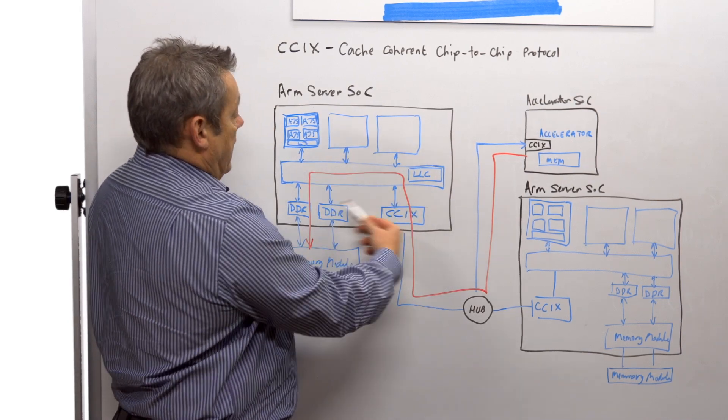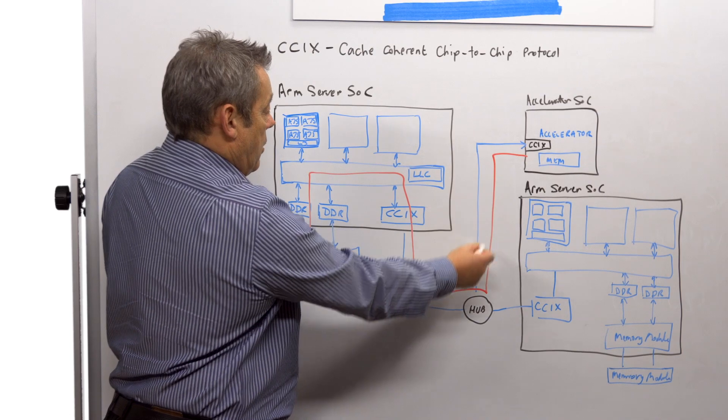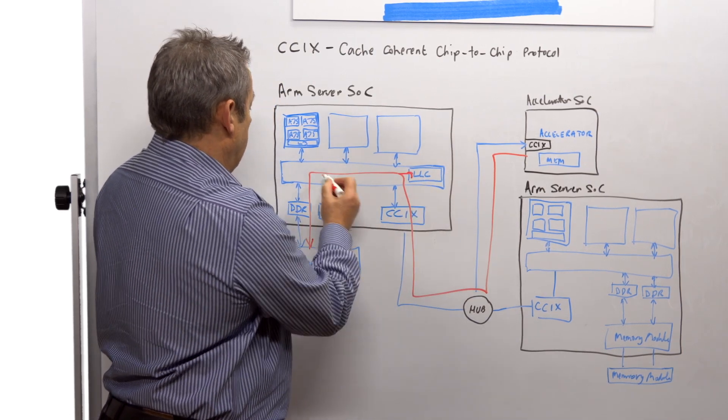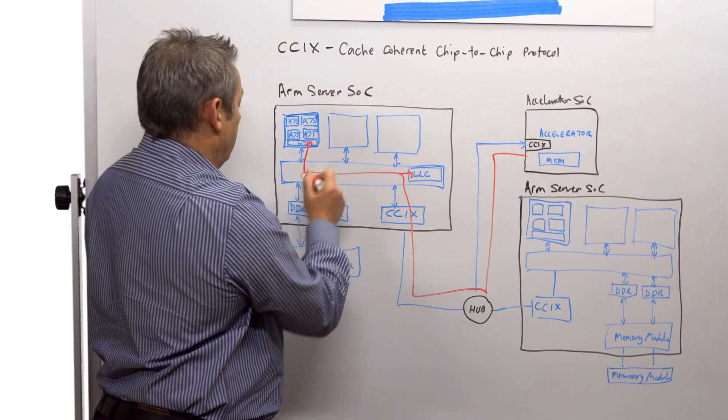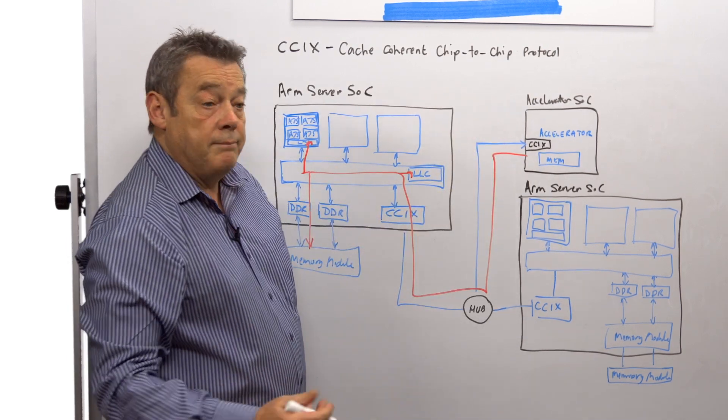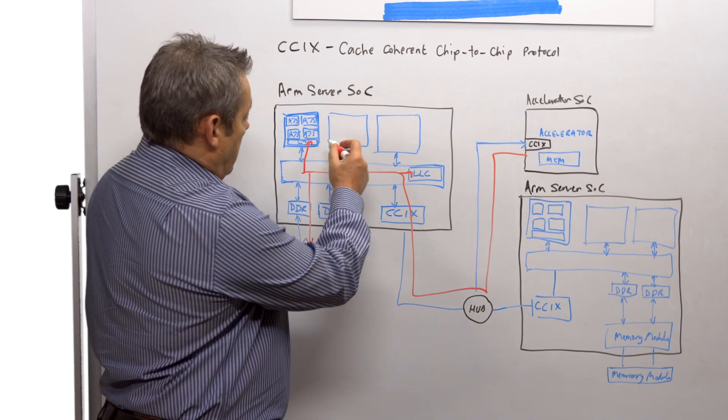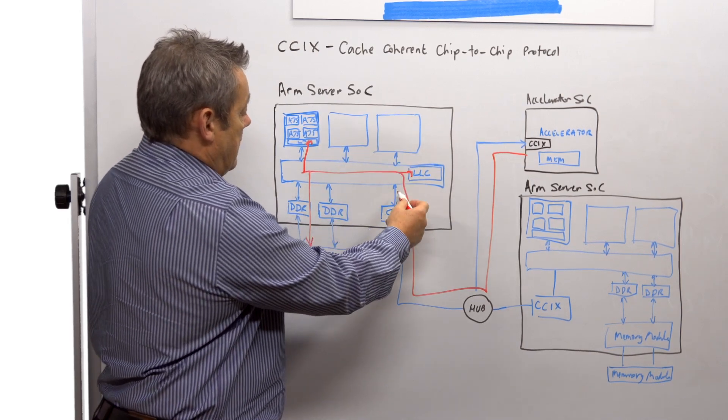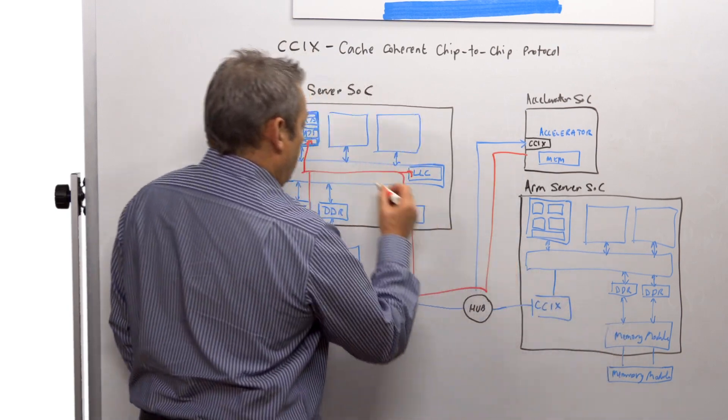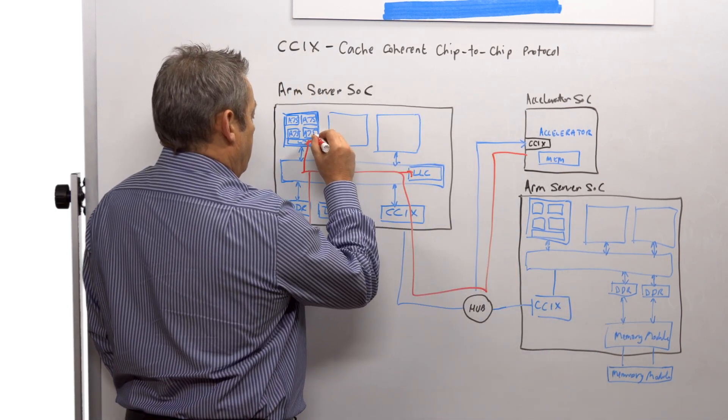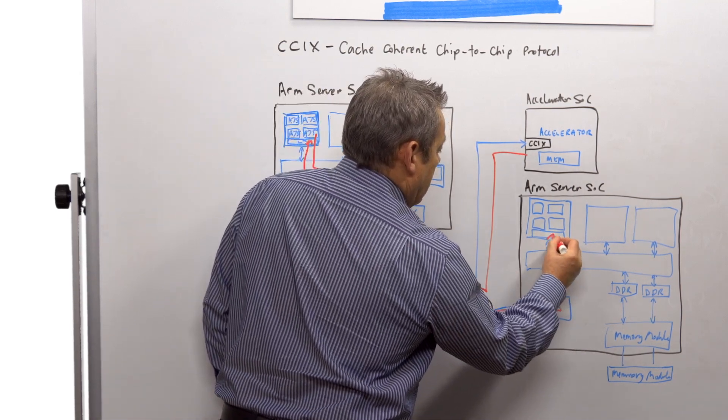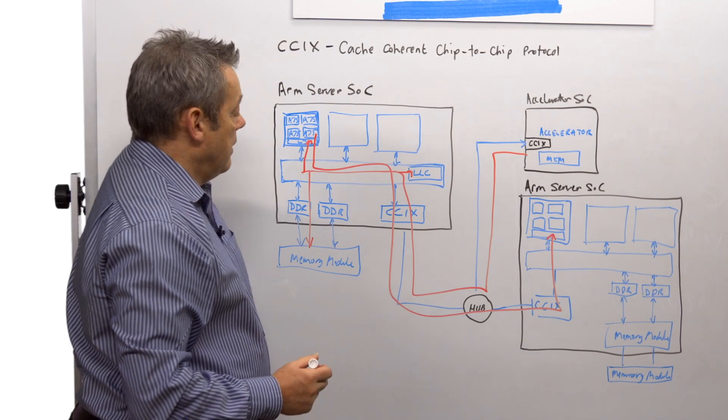But because there is cache in this system, that request may also find the data in the last level cache or in the L3, and that will give us the data back quicker. And in the same way, this device can share data with another server. So the memory in this device could also be read from this processor. Again, we can go all the way out and it may access the cache in there.